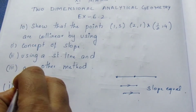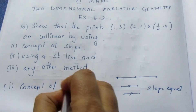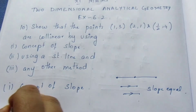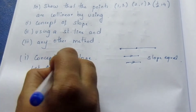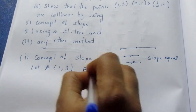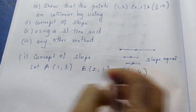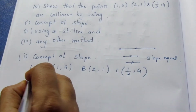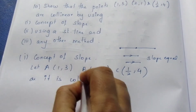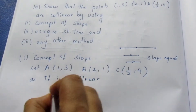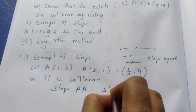First, we will use the concept of slope. Let A, B, C be the three points: A = (1,3), B = (2,1), and C = (1/2, 4). As the points are collinear, slope of AB must equal slope of BC. We will prove this.